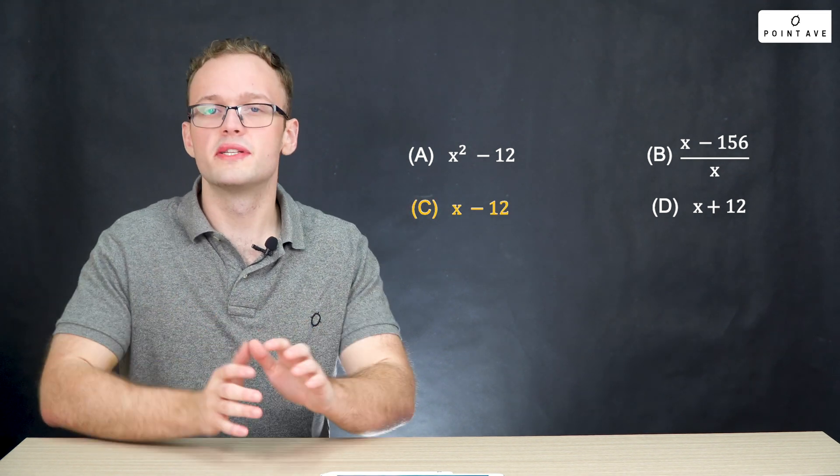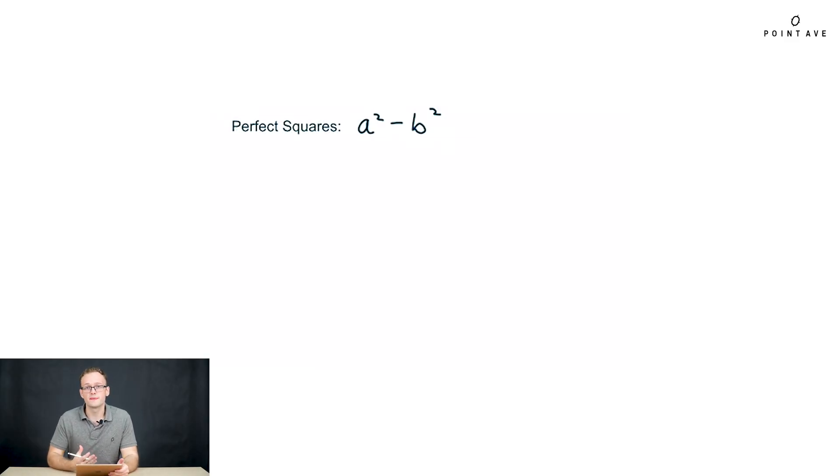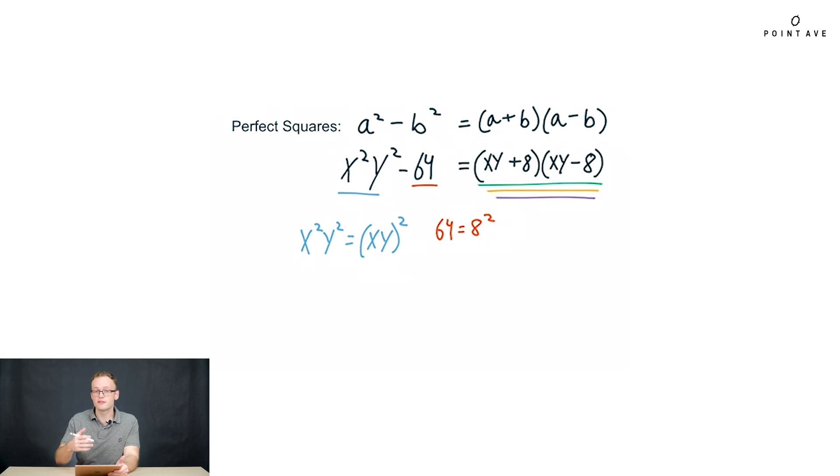One more cool thing that we can do with perfect squares. We can actually generalize what we just learned about perfect squares to things not necessarily of the simple form ax squared minus c. It actually boils down to anything of the form a squared minus b squared. That becomes a plus b times a minus b. Let's see an interesting example. Take the expression x squared times y squared minus 64. x squared y squared is actually the square of xy, so that is our a, and 64 is 8 squared. We can factor this into xy plus 8 times xy minus 8.